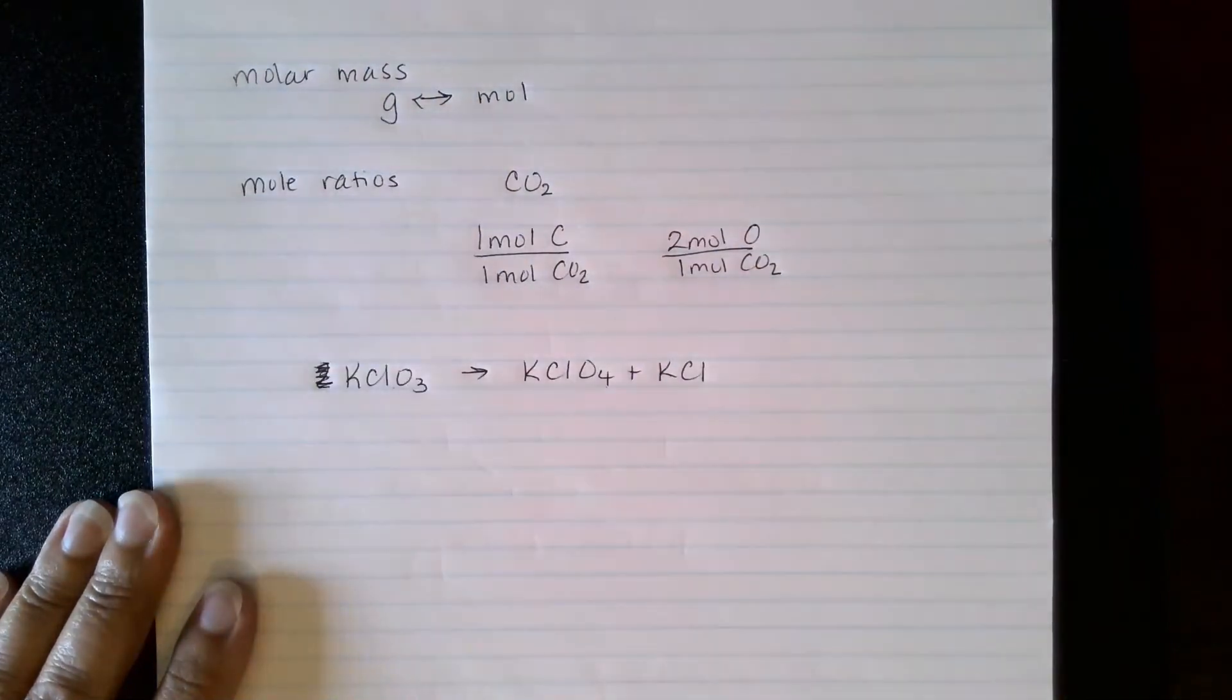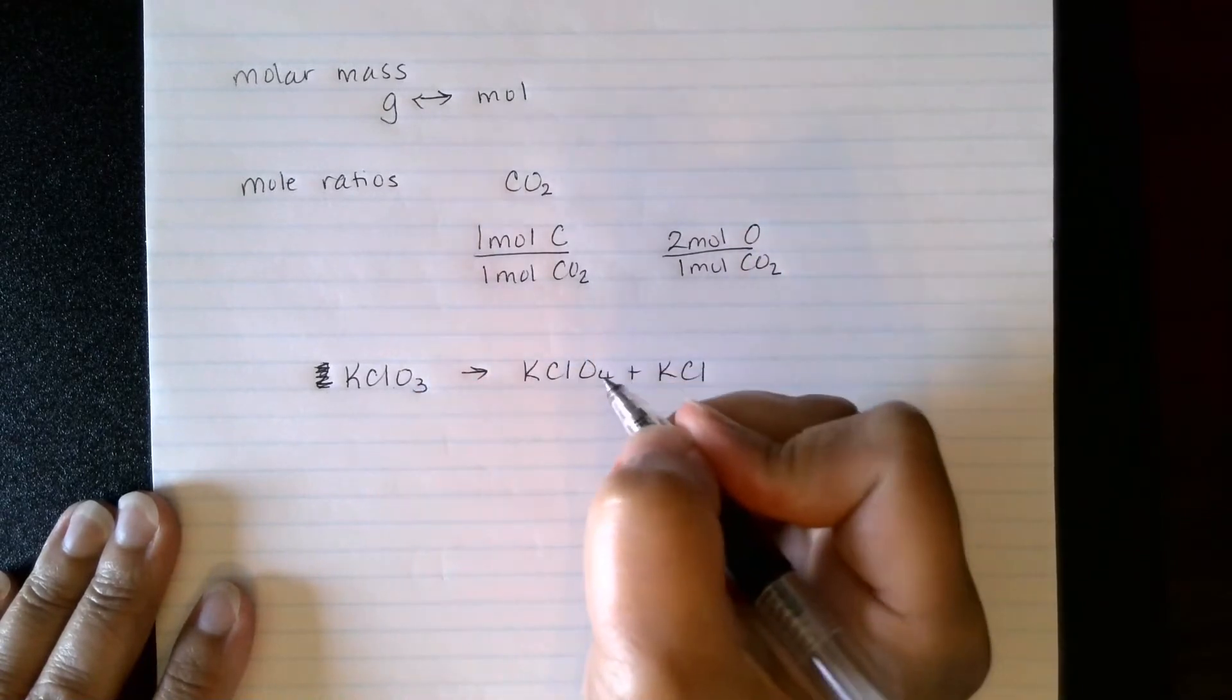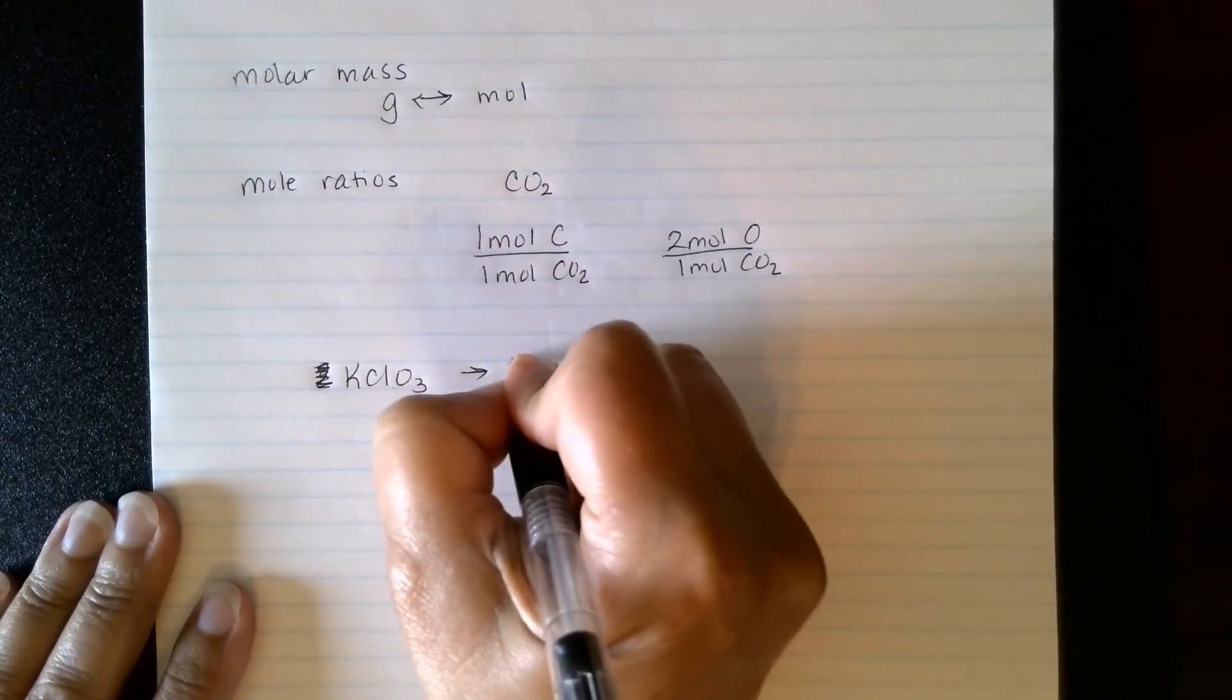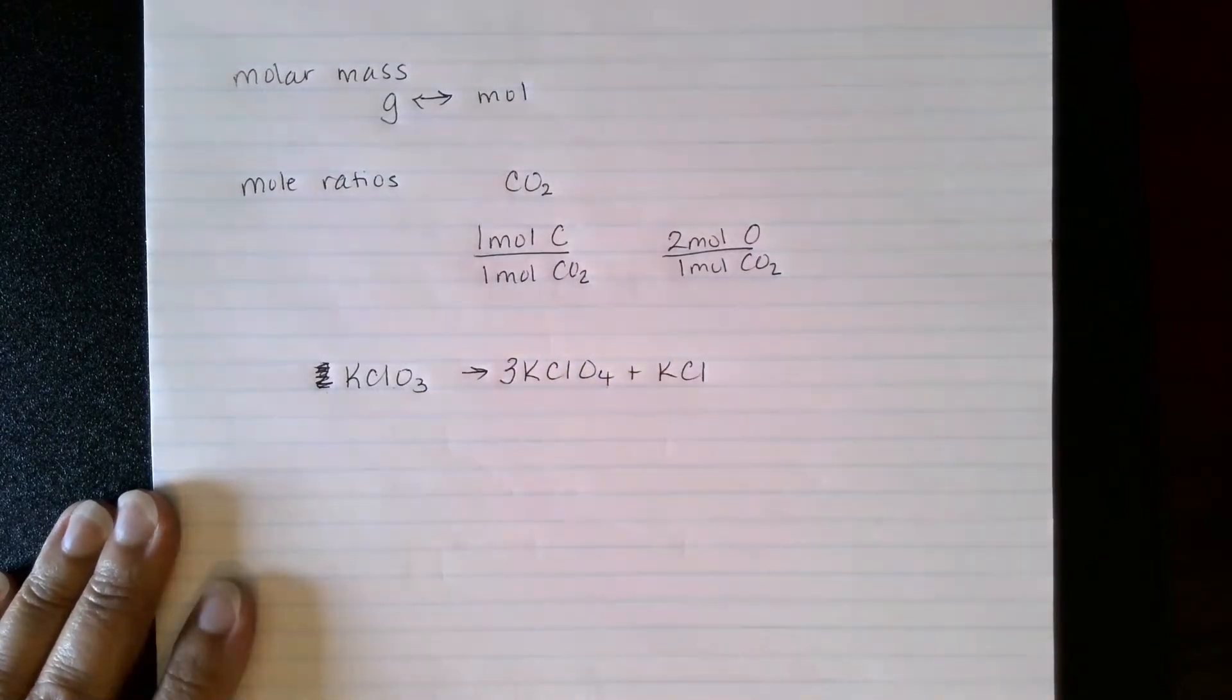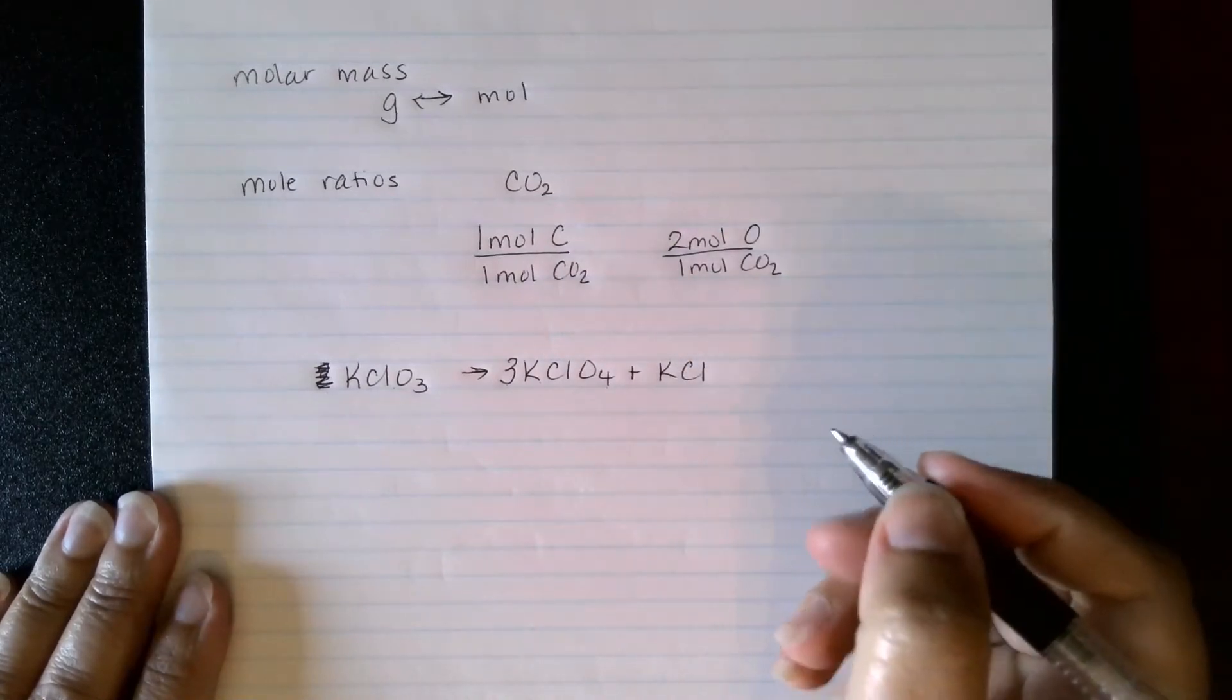So maybe we're going to want to do three, maybe here. So if we have three K's and one K, that would be four. So maybe I'll try four here.